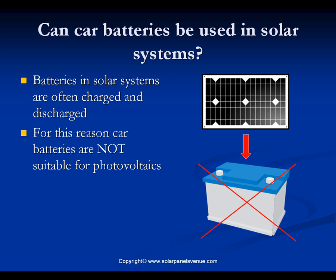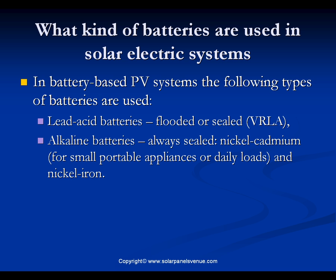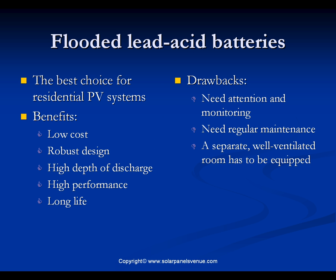In battery-based solar systems, the following types of batteries are used: lead-acid batteries, which can be flooded or sealed, and alkaline batteries, which are always sealed. Alkaline batteries can be nickel-cadmium — used for small portable appliances and daily loads — or nickel-ion. The most popular battery type is flooded lead-acid batteries.